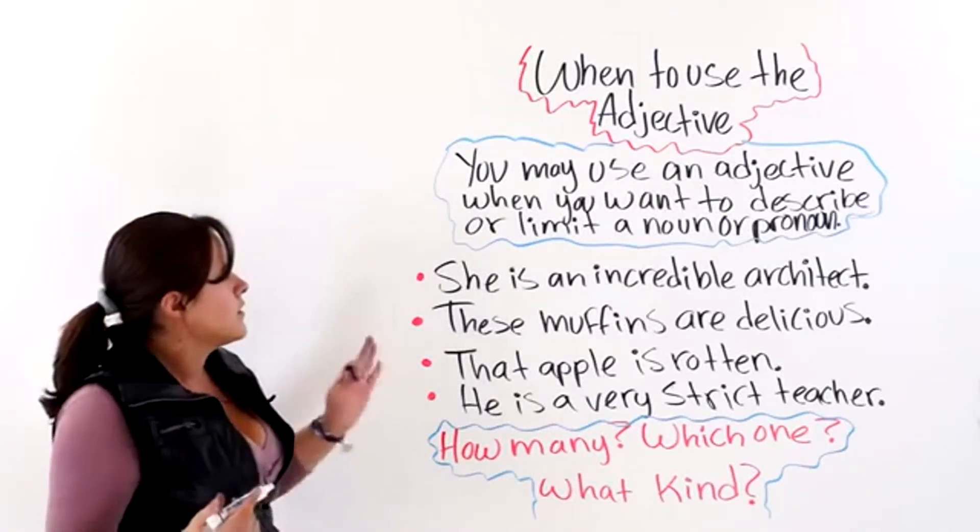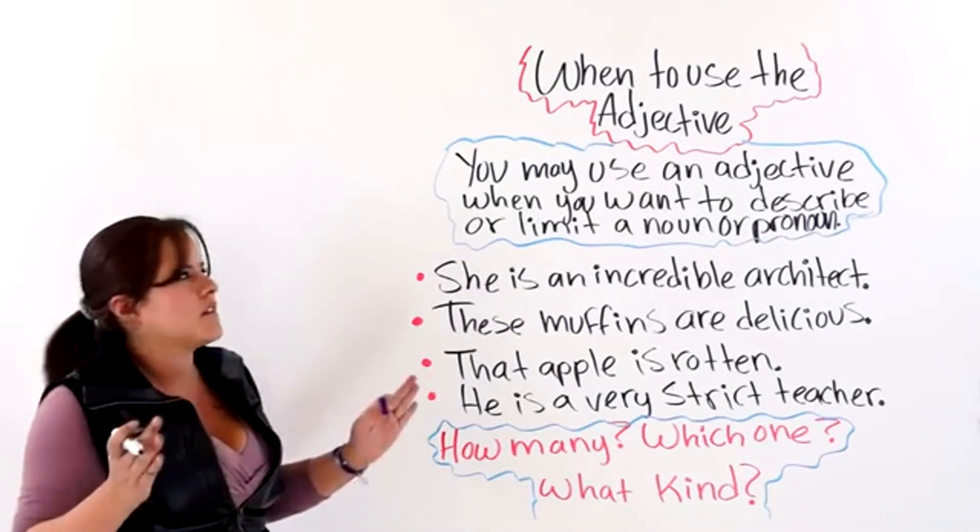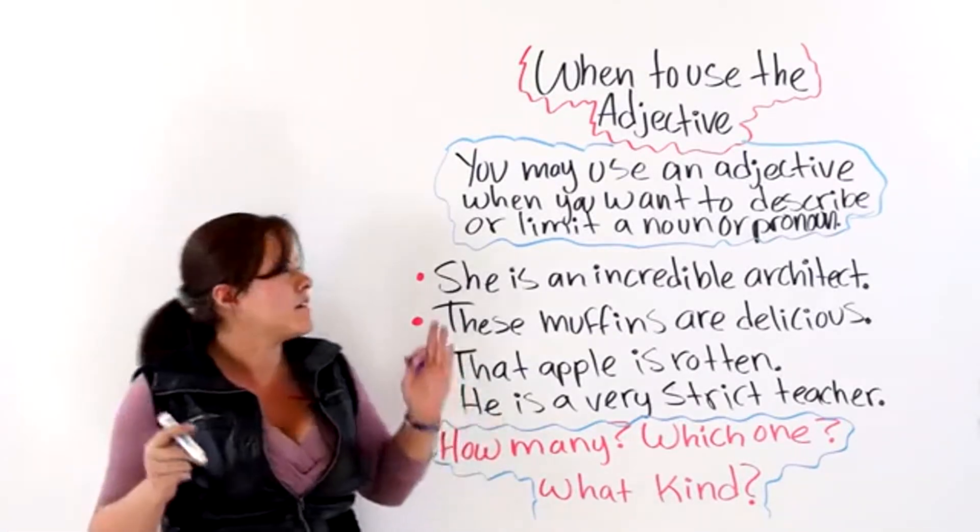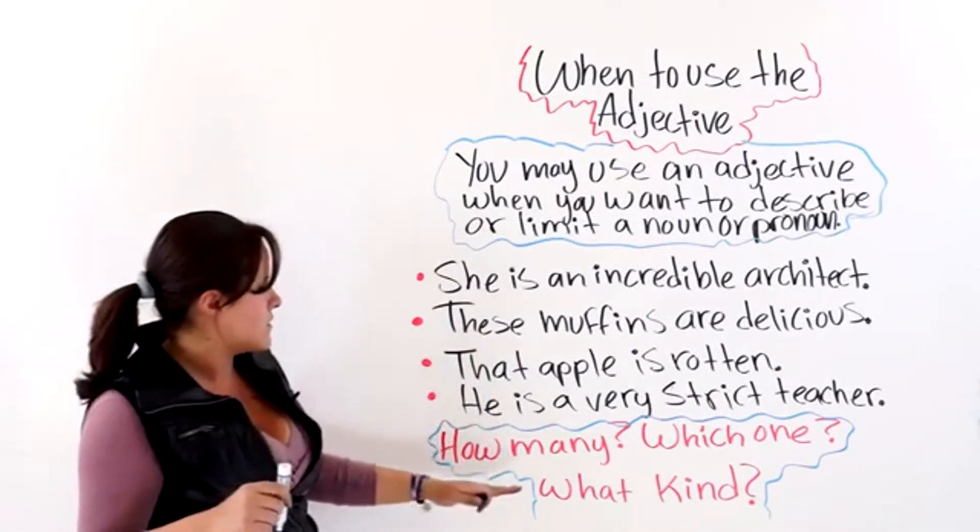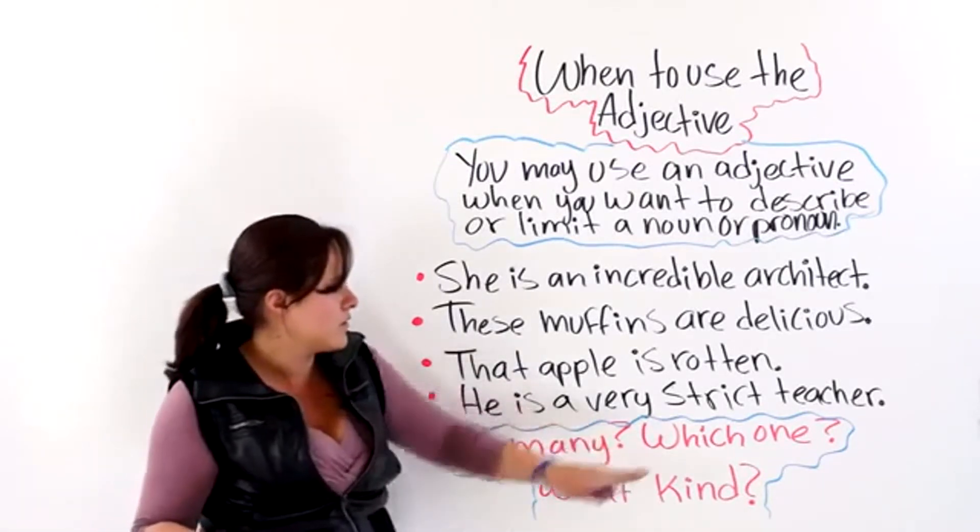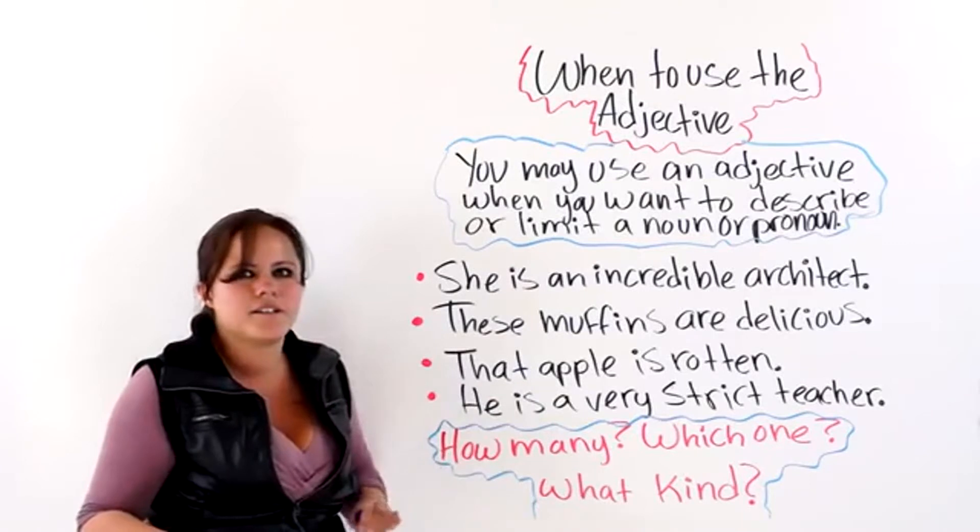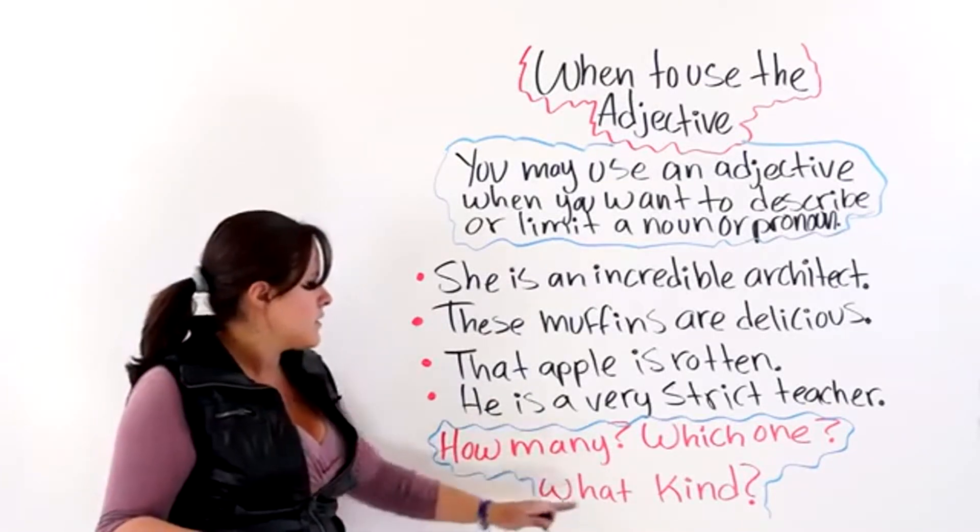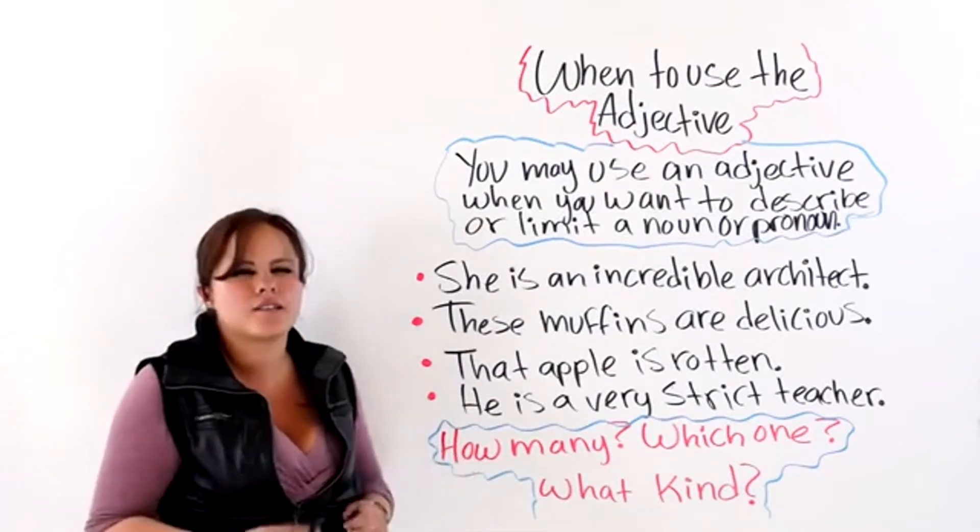So, just specifically when you want to describe a noun or a pronoun. And also remember that an adjective answers the questions: how many, which one, and what kind. If it does not answer any of these three questions, it is not an adjective.